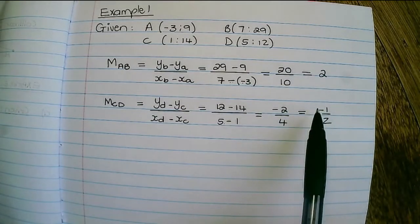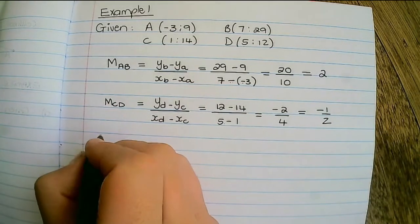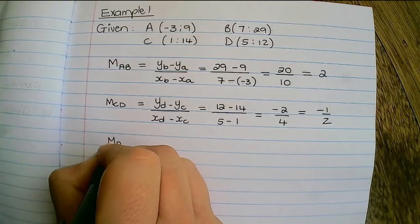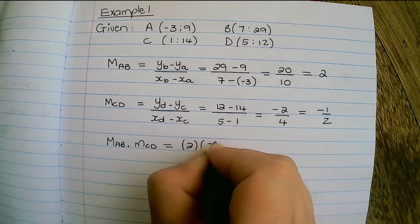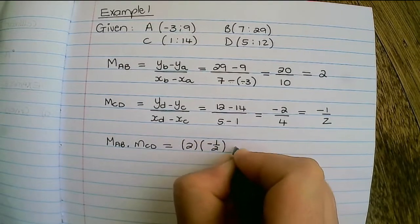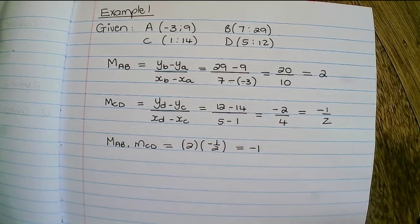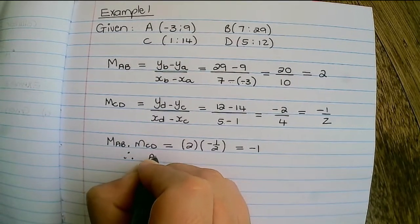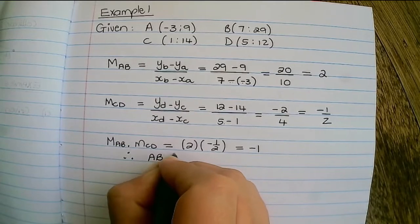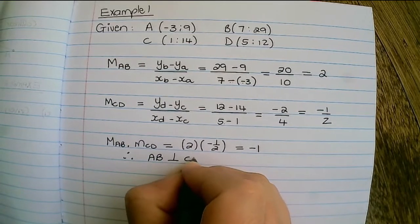And if I multiply the two gradients, I'll have 2 multiplied with negative 1 half, which will produce negative 1. Therefore, we can conclude that the line AB is perpendicular to the line CD.